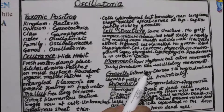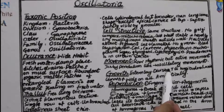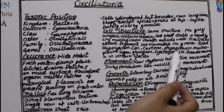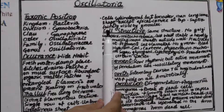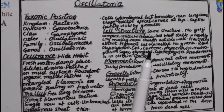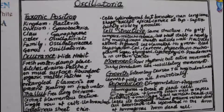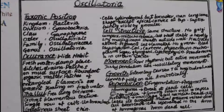The growth of Oscillatoria is intercalary, meaning cell division takes place between cells. Division occurs at a right angle to the longitudinal axis. As cells divide and increase in length, the overall filament length increases. There is no increase in the breadth or width of the cell — growth is only in length.